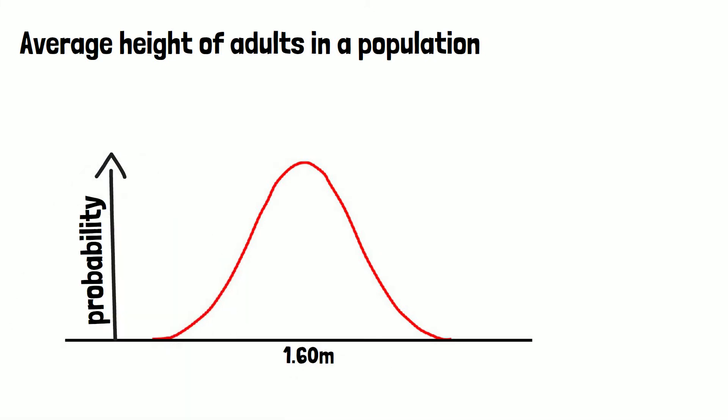Or in other words, the probability of finding a person that is 1 meter 60 large is very high, whereas to find a person of 190 is very low. Because heights like 190 or 140 are rare compared to heights between 160 and 180, for example. So what you can see here is the probability distribution of heights in adults in a population.